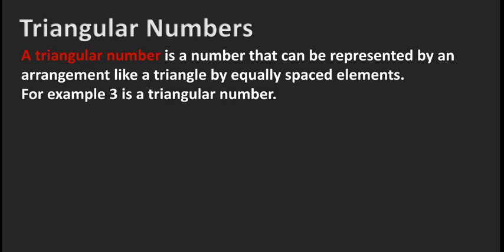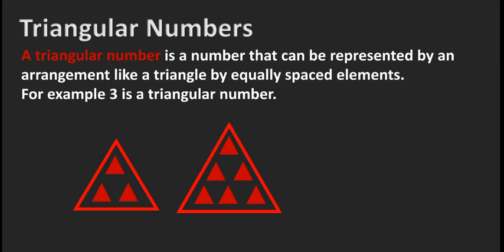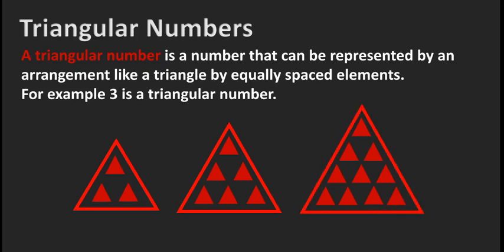For example, 3 is a triangular number — we can arrange 3 elements to form a triangle, so 3 is a triangular number. Similarly, 6 elements can be arranged like a triangle, so 6 is a triangular number as well. And 10 elements can also be arranged like a triangle, so 10 is a triangular number as well.